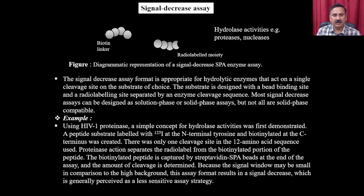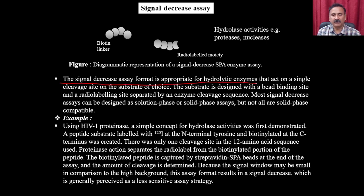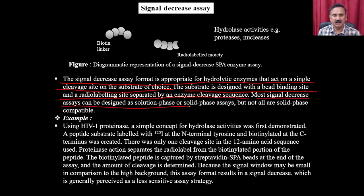The signal decrease assay format is appropriate for hydrolytic enzymes that act on a single cleavage site on a substrate. The substrate is designed with a bead binding site and a radiolabeling site separated by an enzyme cleavage sequence. Most signal decrease assays can be designated as solution phase or solid phase assays, but not all are solid phase compatible. For example, you can use the SPA-based protease assay to measure HIV-1 protease.